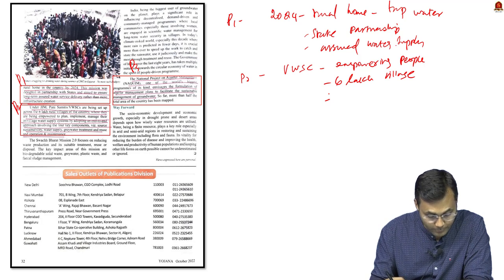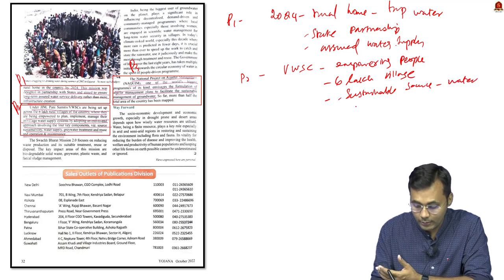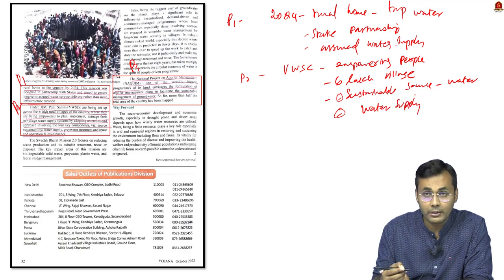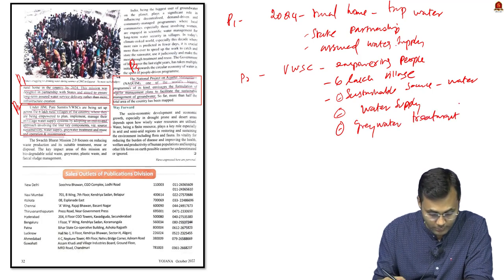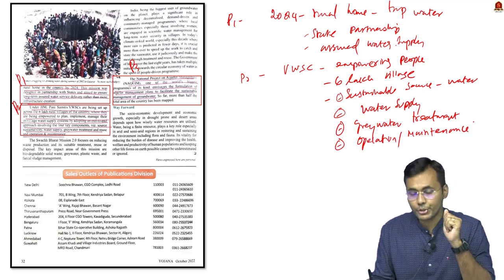The Jal Jivan Mission focuses on four aspects: sustainable sources of water throughout the year and all seasons; water supply infrastructure; grey water treatment for reusable waters; and operational maintenance.